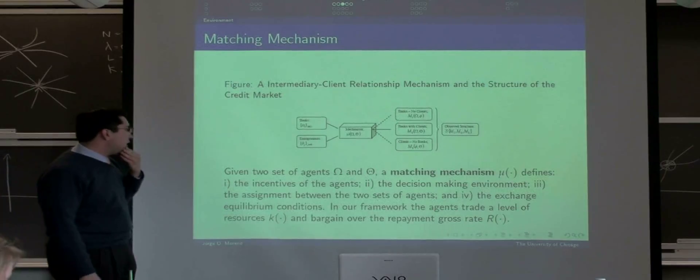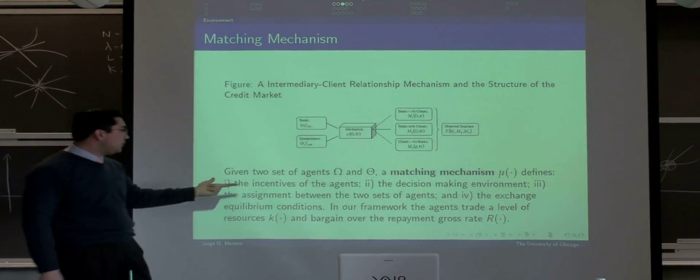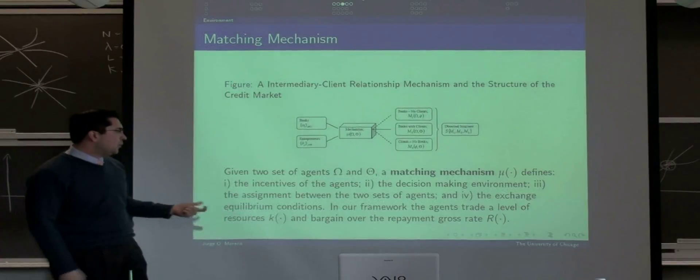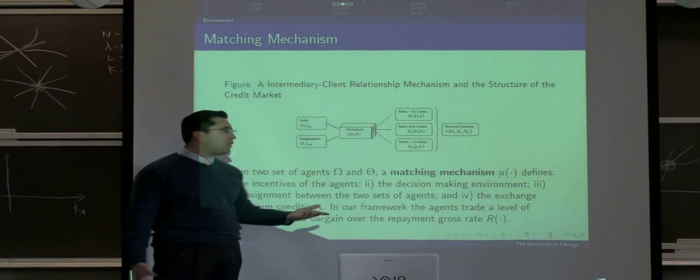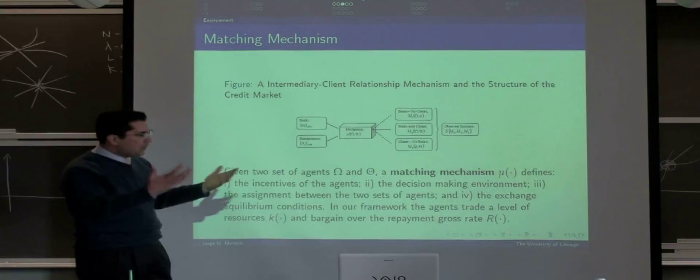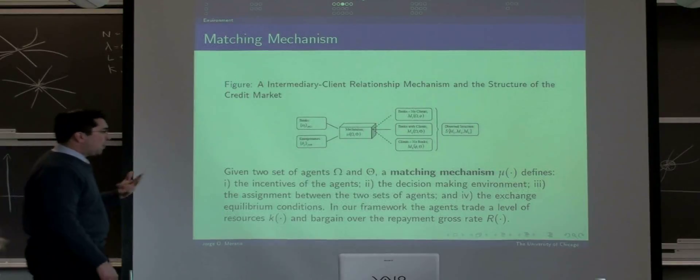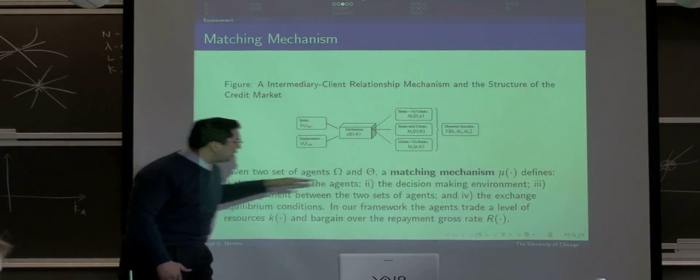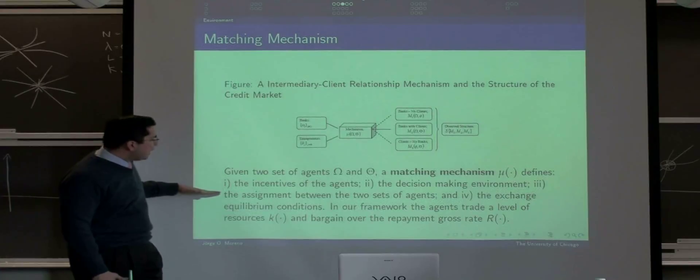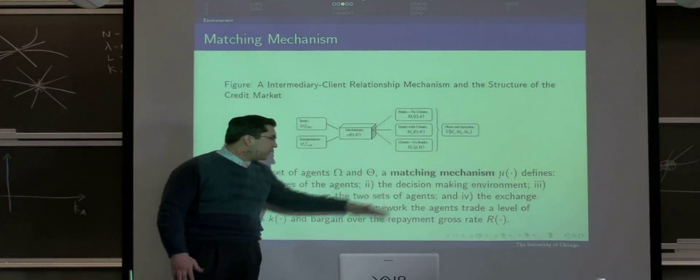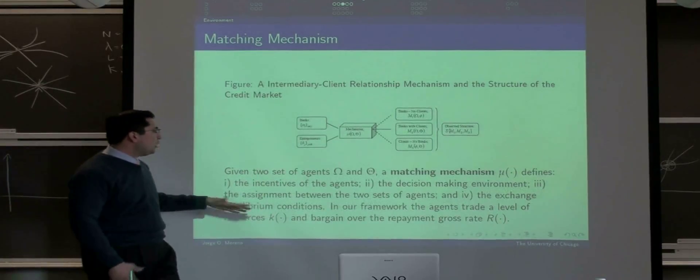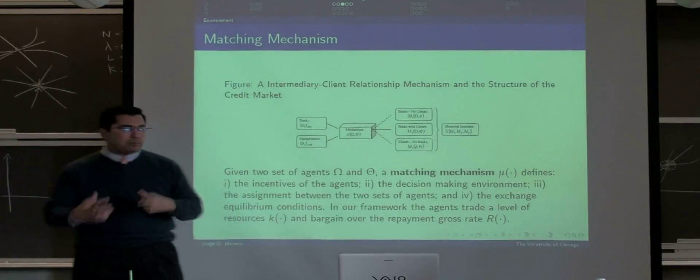What the matching mechanism does is, first, define the incentives of the agents and what they are doing. Second, the decision-making environment given the information they have. Third, given these two interactions, how these guys assign them between themselves, and what is the exchange equilibrium from this optimal interaction.